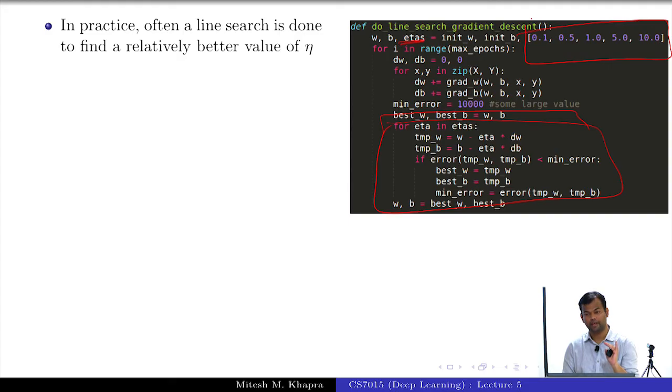Retain that w comma b value and repeat the process. That means again you will compute the gradients with respect to this new value of w comma b and the new loss function, again try out these 5 different learning rates and continue.